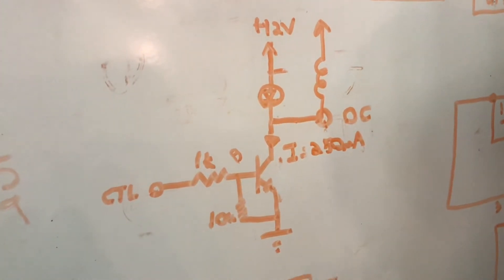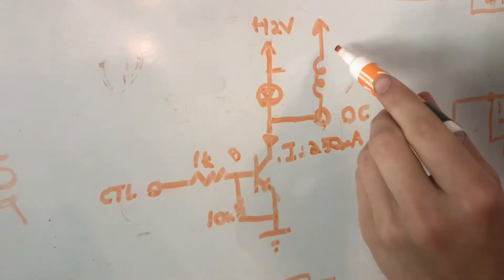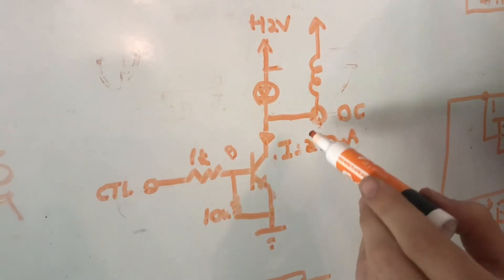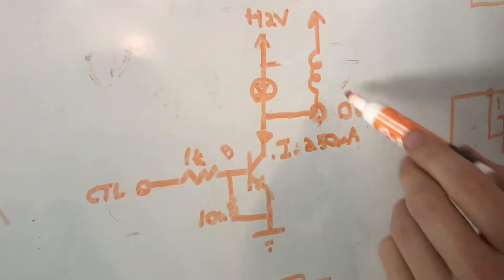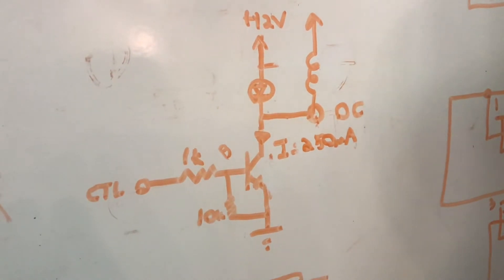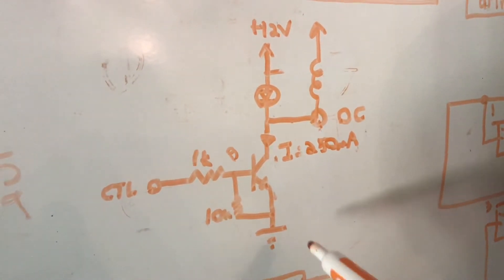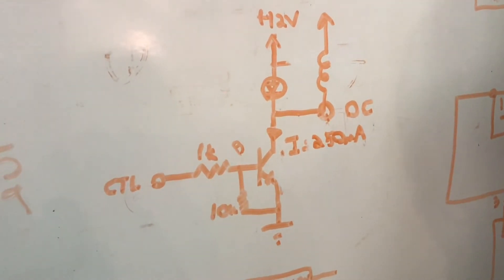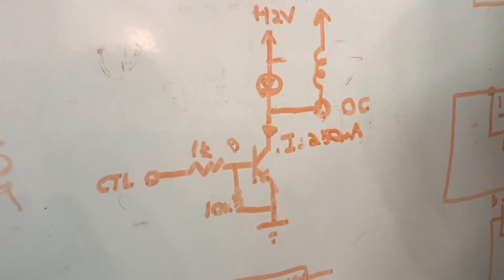So what this diode does is it creates a short circuit, so that any current going that direction is just going to be shorted and eliminated. However, it will allow current going up, and that's the action. So that's called a flyback diode, and these are all the components that you need to control a relay.